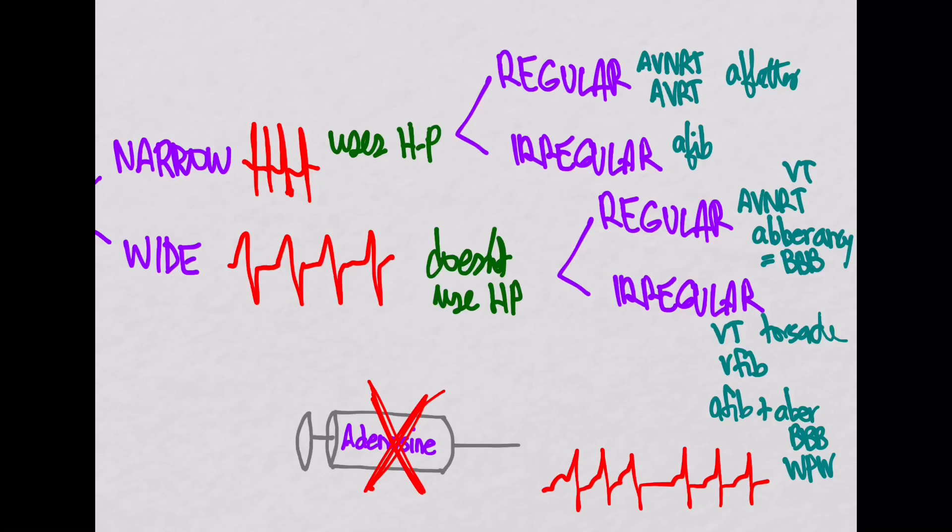And then of course, the last thing they say is that if you ever have an unstable patient, if the patient's hypotensive, has heart failure or coronary ischemia, then don't worry about the drugs, just cardiovert them.